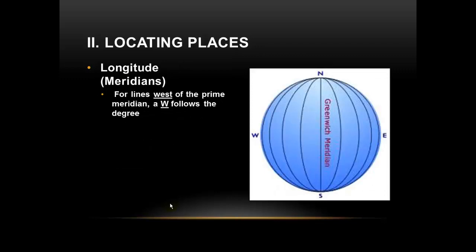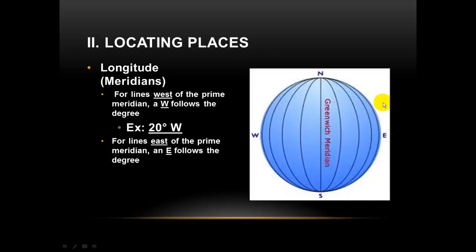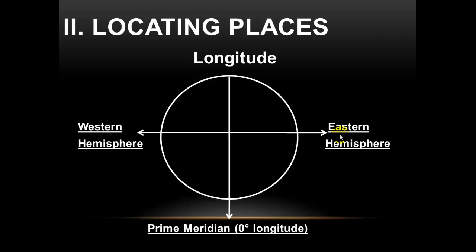Locating places using lines of longitude: for lines west of the prime meridian, a W follows the degree. For example, a line to the left of the prime meridian would be 20 degrees west. For lines east of the prime meridian — to the right — an E follows the degree. So a line to the right of the prime meridian would be 20 degrees east. The western hemisphere is to the left of the prime meridian and the eastern hemisphere is to the right.